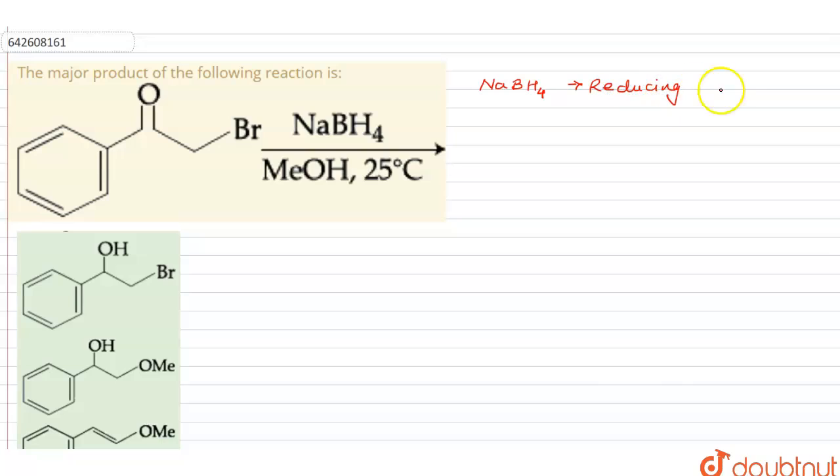And this reducing agent causes the reduction of C double bond O to CHOH. So it's an alcoholic conversion which it gives.